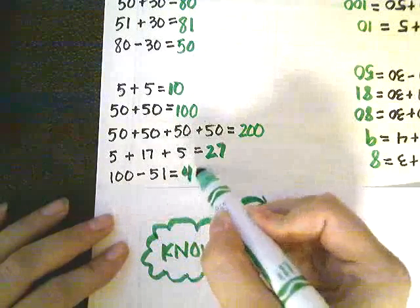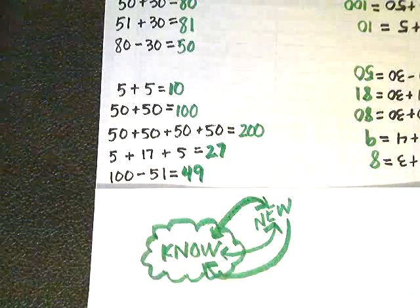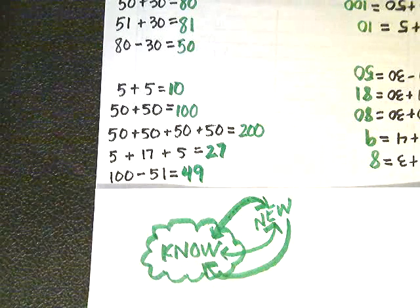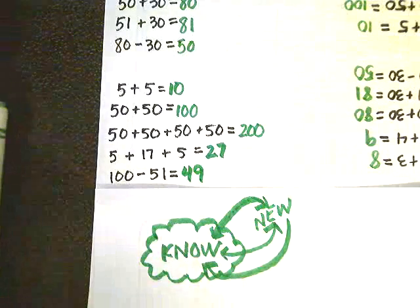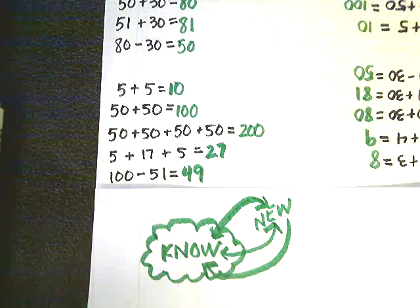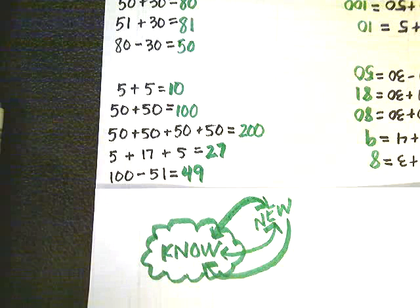Now I have 80 minus 30. Well, if I look up here, I know that 50 plus 30 equals 80. That's a fact family. 50 and 30 and 80 are related because when you shuffle them around, you get different facts. So I know 80 minus 30 is the other number in the family, which is 50.